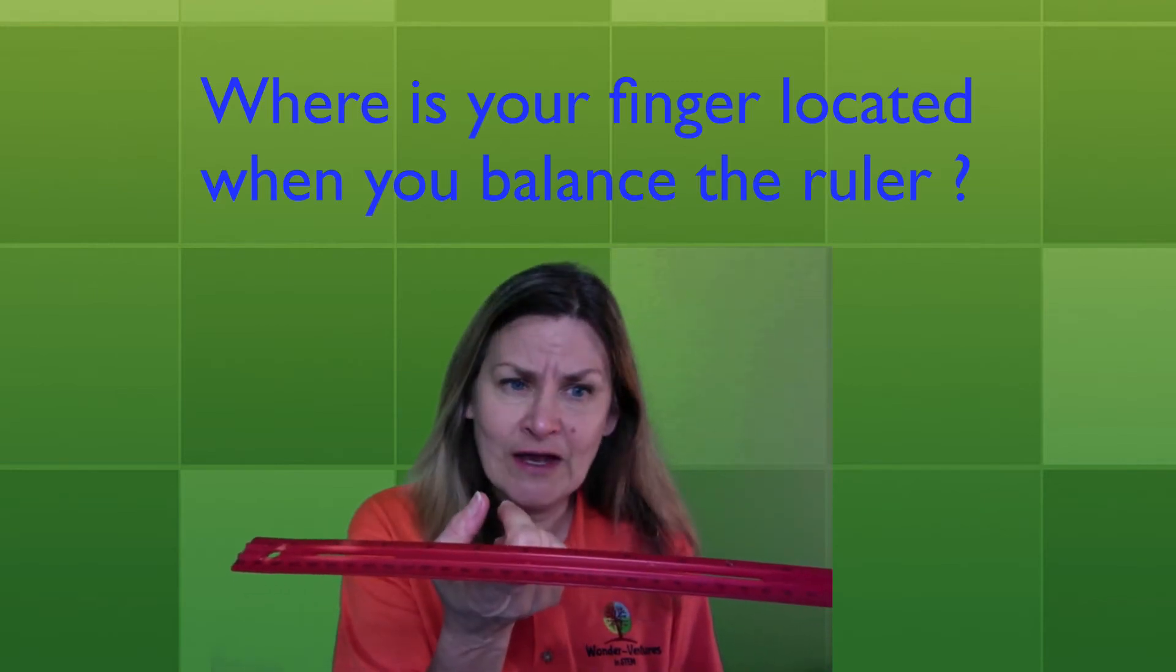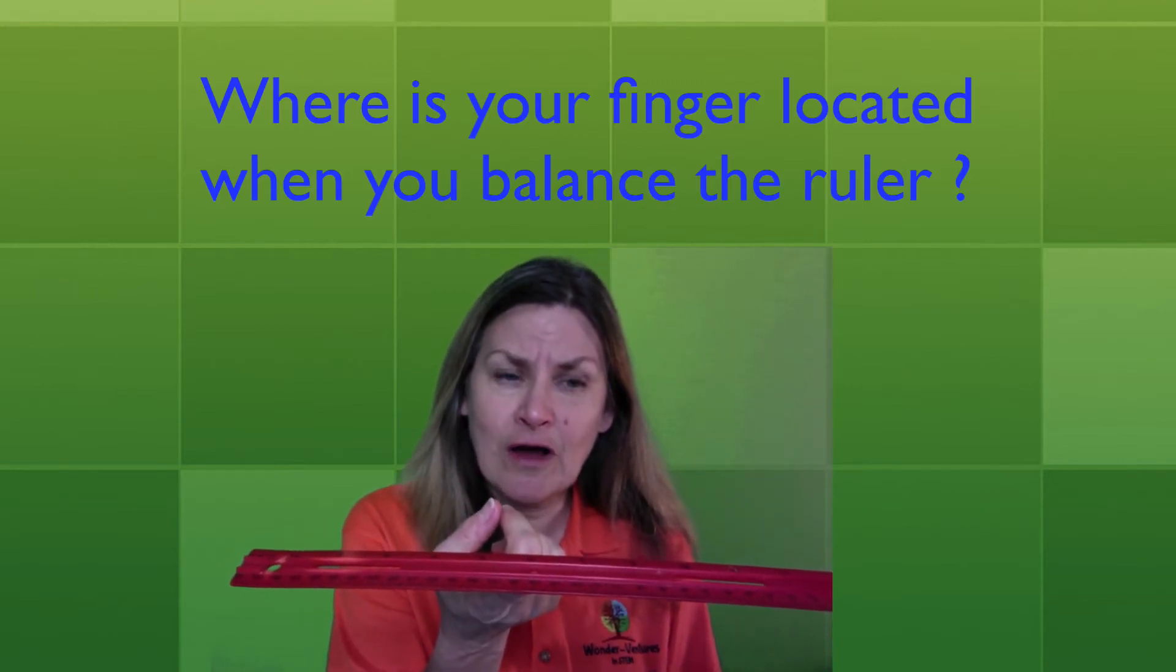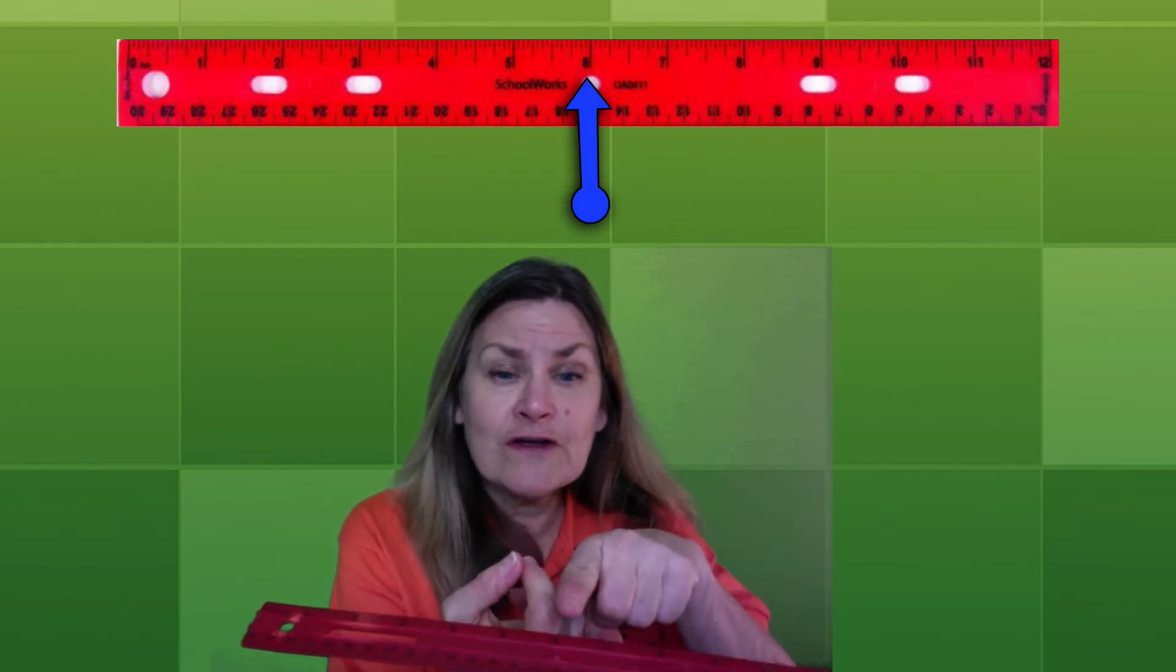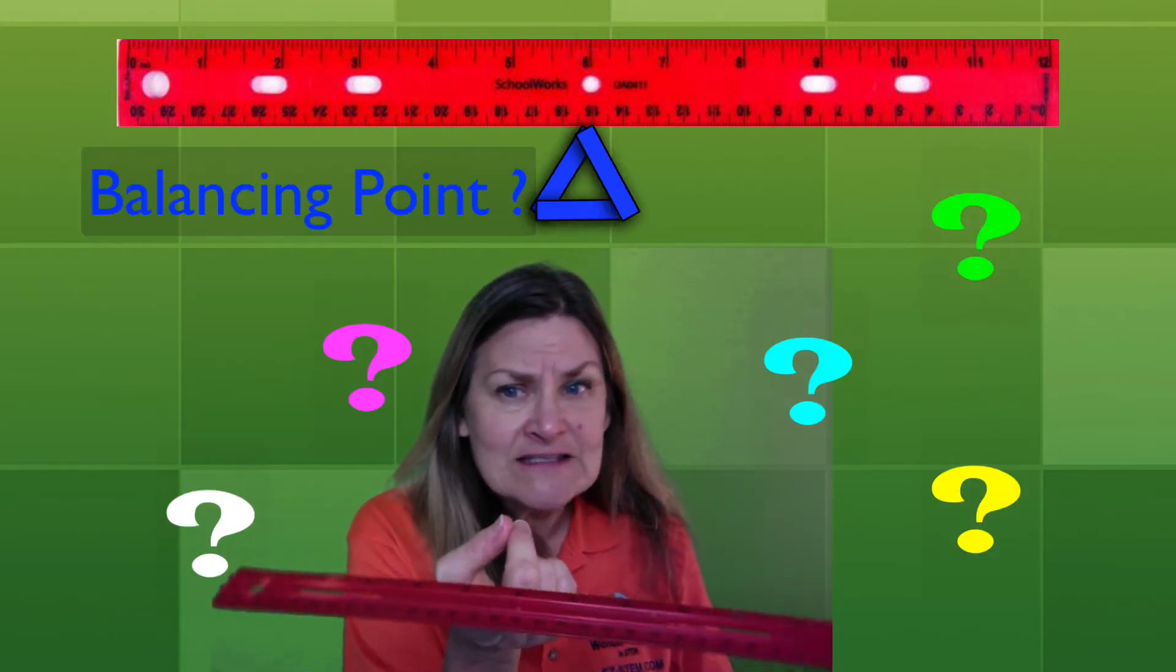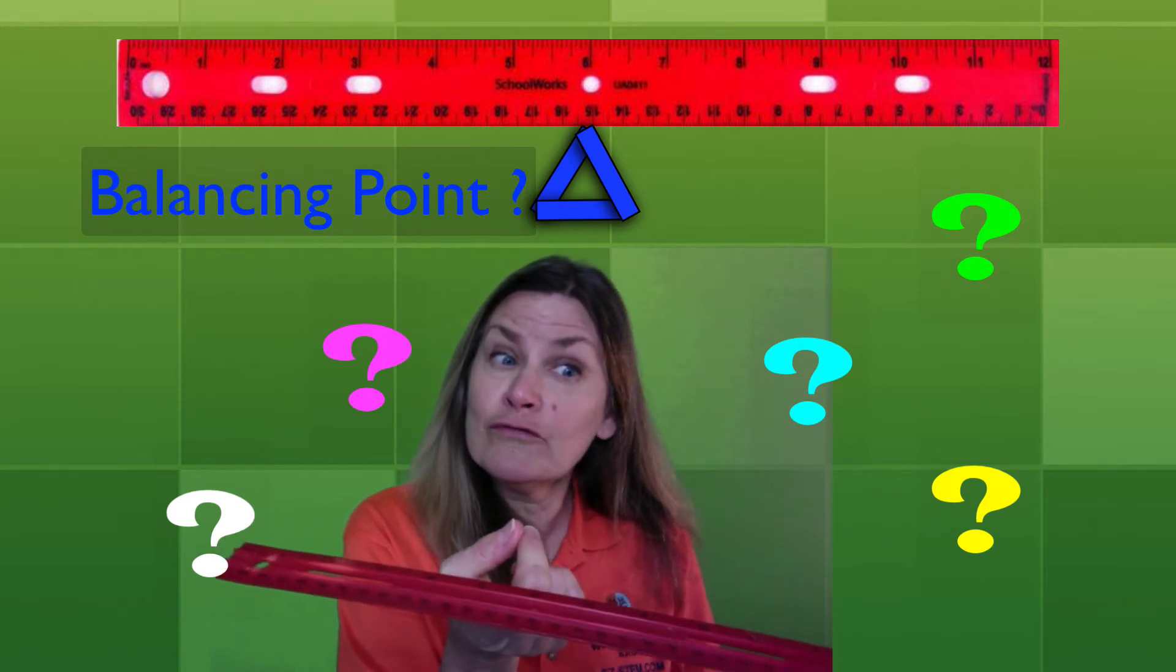Ha ha. Done. So where is your finger located when you balance the ruler on your finger? If your ruler is like mine your finger should be very close to where the number six is or the middle of your ruler. And why do you think that is the balancing point for the ruler?